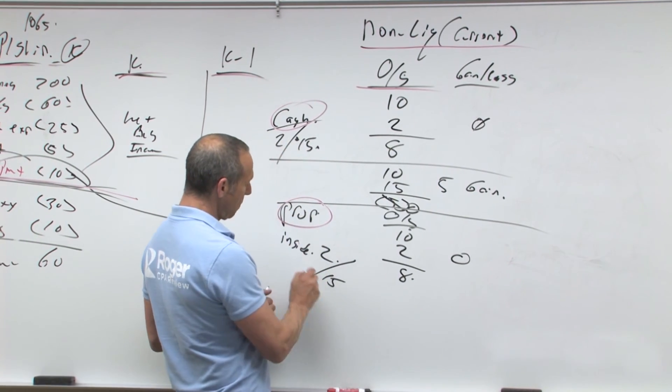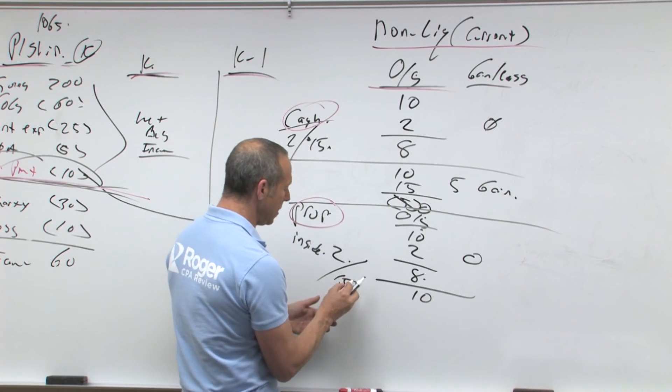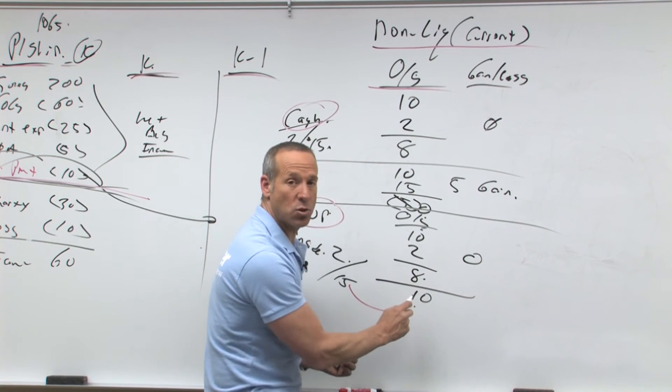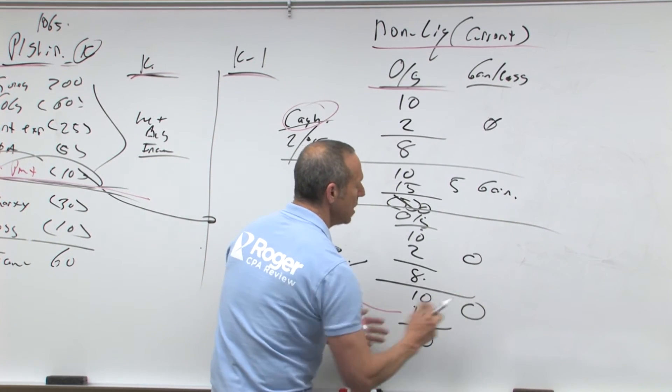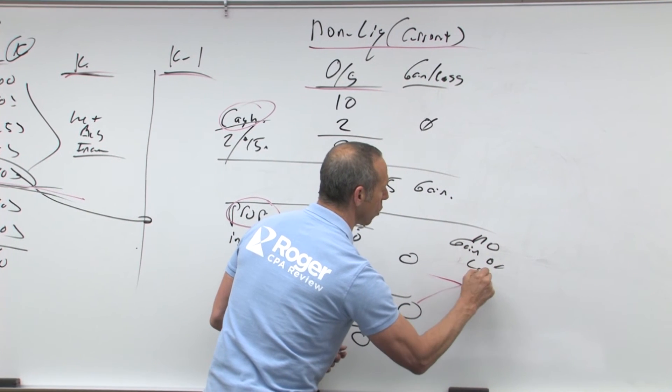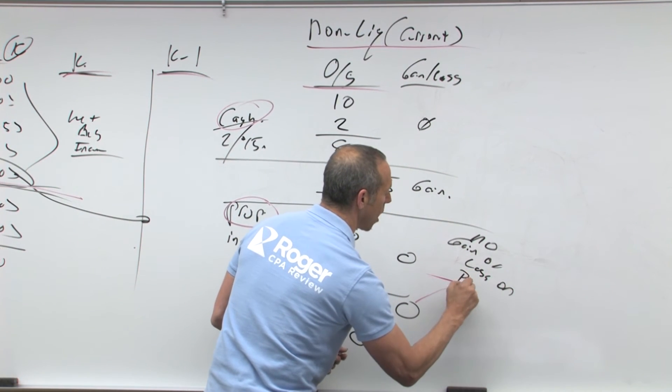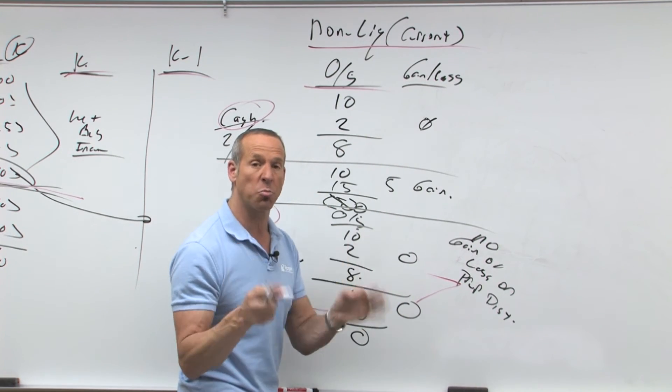Next one. Let's say the basis is $15. So starting out I have an outside basis of $10, I get $15. But guess what? You only pick it up for $10, why? Because you can never have a gain or loss on property distribution. Remember that, no gain or loss on property distribution.